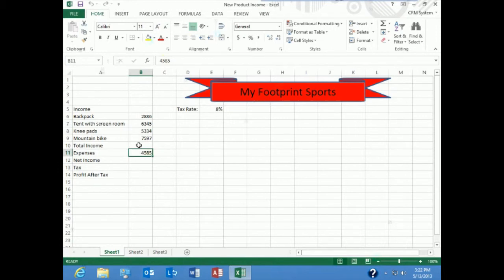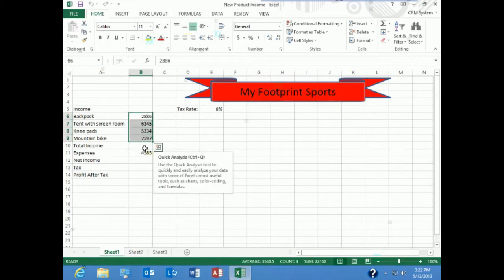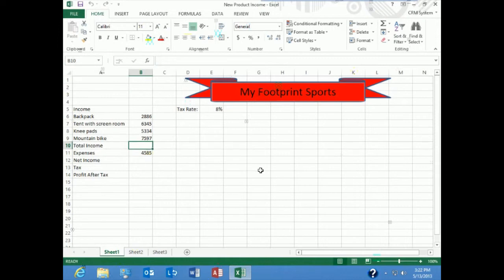The first formula is for total income. Our income for our four products is there and we need to write a formula. I'm going to start my formula with an equal sign. Now I could type in B6, but it's quicker if I just take my mouse and click, it will type the B6 for me, and then a plus, click on B7, plus B8, plus B9.